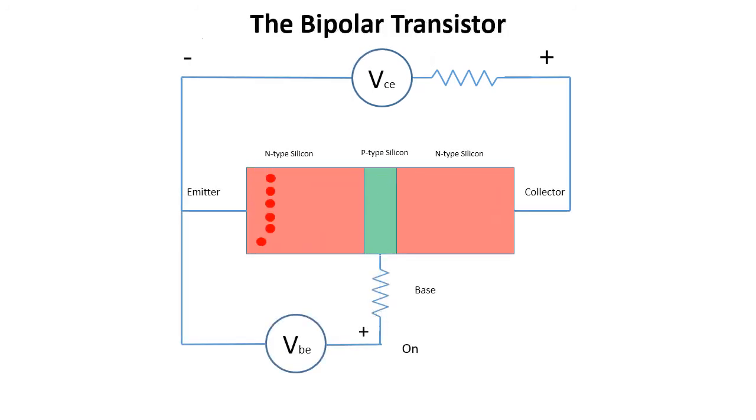If we connect another small voltage source VBE with the positive terminal connected to the base, and a negative to the emitter, then a small current will flow between the base and the emitter. This causes a much larger current flow between the emitter and the collector. By turning the base voltage off, the transistor turns off and no current flows. Therefore, by turning the base current on and off, the transistor becomes a switch.